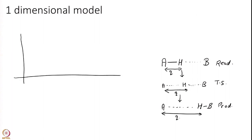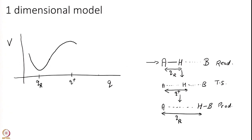If I draw a potential energy with respect to this coordinate Q: when Q is small, corresponding to the reactant distance, I will have some kind of a minima which basically says that A–H is forming a bond — whenever you have a bond you have a minima in the energy surface. The transition state distance, by definition, should have a maxima along the reaction coordinate. And when Q is very large you will have another minima. So this is my reactants, this is the transition state, and this is the product. I simply want to understand Transition State Theory for this simple one-dimensional model today.